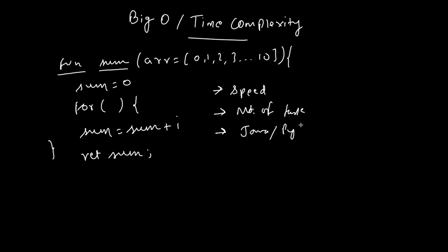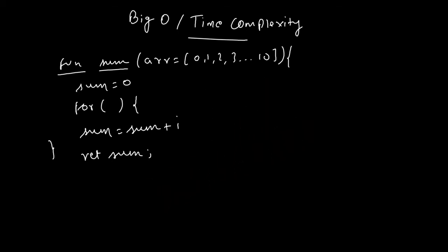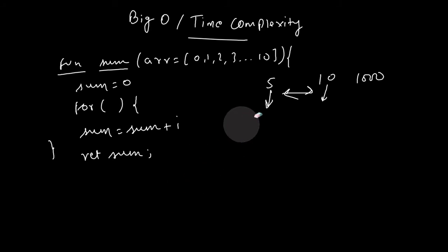Another factor is what language we use — Java or Python — since different languages have different runtimes. So instead, what we ask is: how does the runtime of the function increase as we increase the size of the input? With five elements it takes less time than ten elements, and a thousand elements takes even more time.